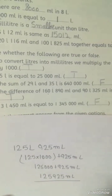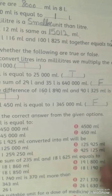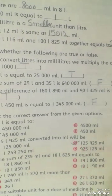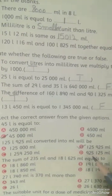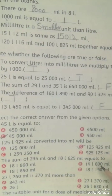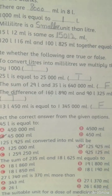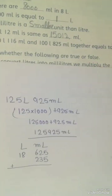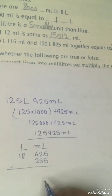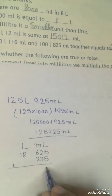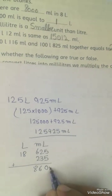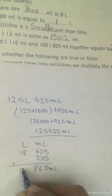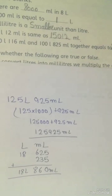Next question: the sum of 235 milliliters and 18 liters 625 milliliters equals? We will solve this. The answer you will get is 18,860 milliliters. This is your answer.